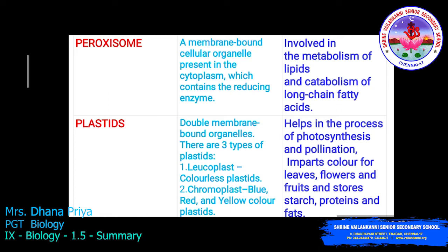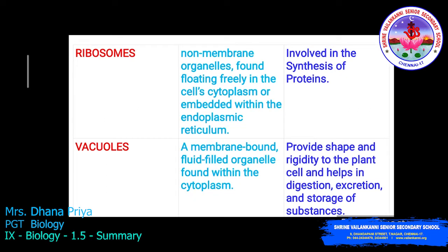The function of plastids is to help in the process of photosynthesis and pollination, to impart color to leaves, flowers, and fruits, and to store starch, proteins, and fats. Ribosomes are non-membrane organelles found floating freely in the cell cytoplasm or embedded within the endoplasmic reticulum.